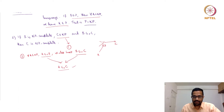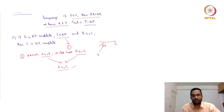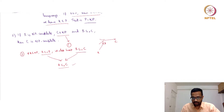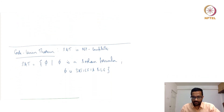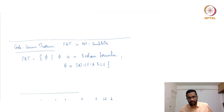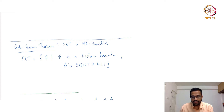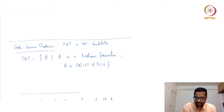If B is NP-complete and B reduces to C in polynomial time, then C is NP-hard. And if C is also in NP, then C is NP-complete. Now, after that quick review, let us get to the proof of the Cook-Levin theorem, discovered in the early 1970s. It shows that SAT is NP-complete.